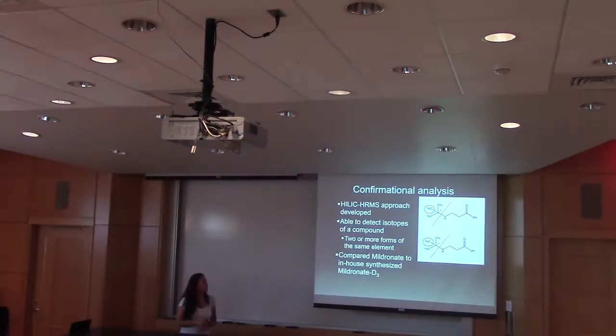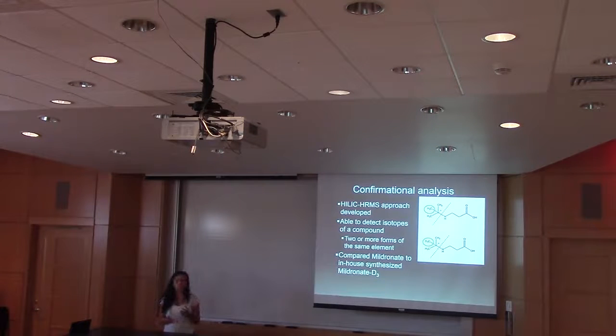And then as another conformational analysis, they synthesized their own meldonium molecules. So they used an isotope of hydrogen, which is basically another form of hydrogen element. Right here, as you can see the D, we have a CH3 and then a CD3. And they compared that and used different tests to be able to make sure that the test was specific enough to be able to test minor differences in a molecule.